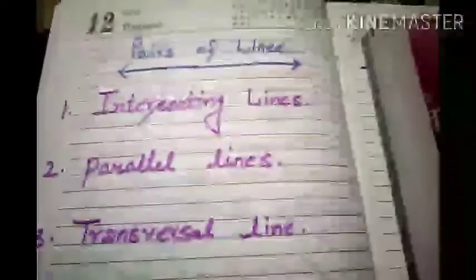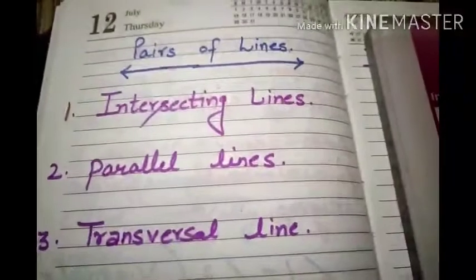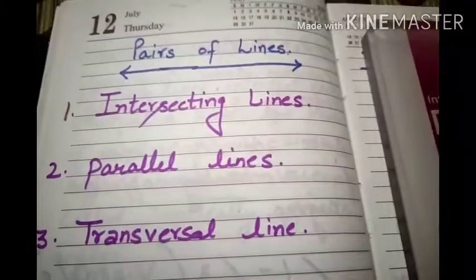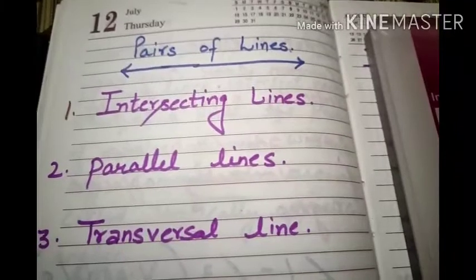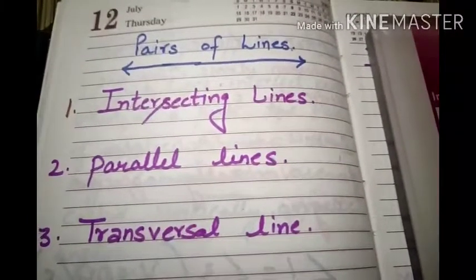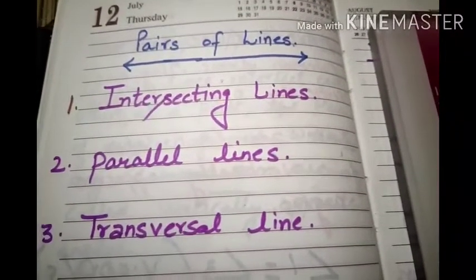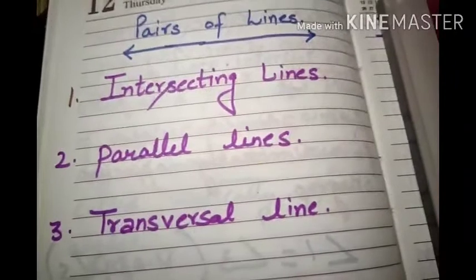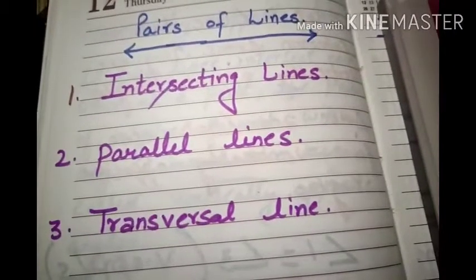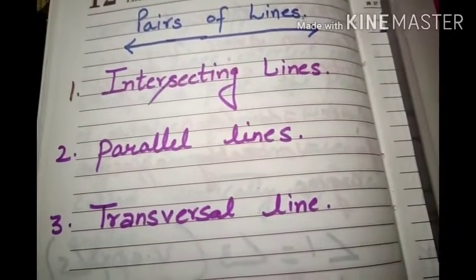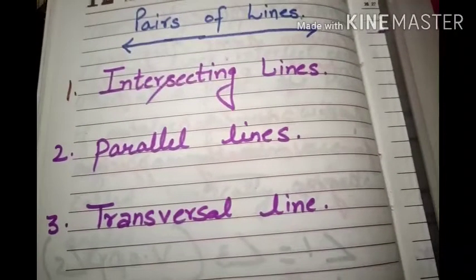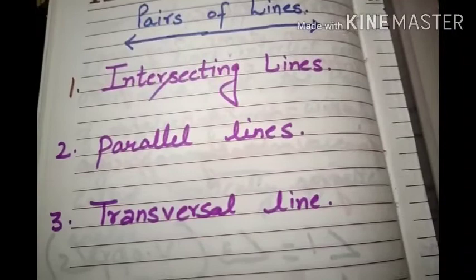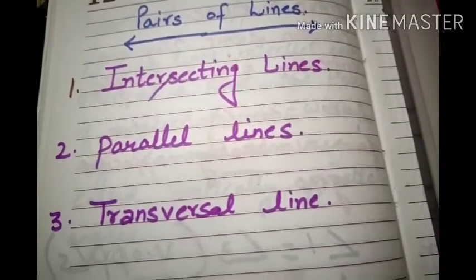Okay students, as you know we are discussing the chapter Lines and Angles. In today's video, we will discuss the pairs of lines. I have written three types of lines: intersecting lines, parallel lines, and the transversal line.